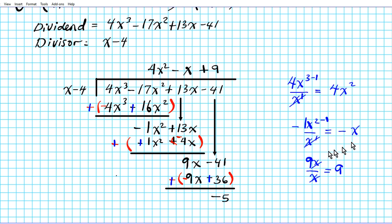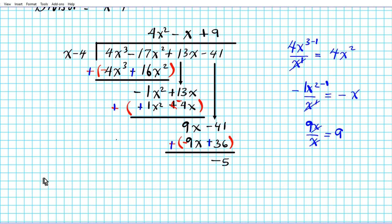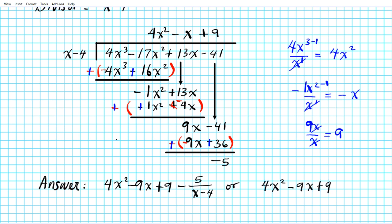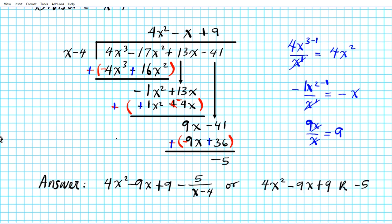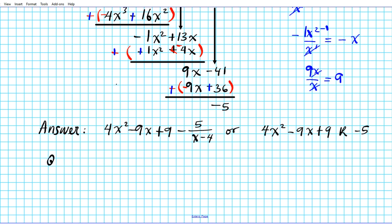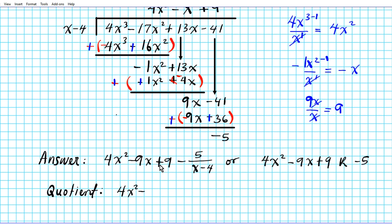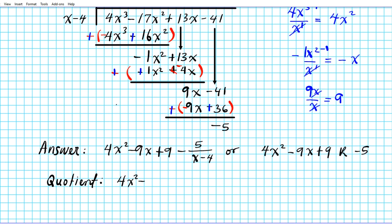Our answer is 4x² minus x plus 9, with a remainder of negative 5 over x minus 4. You can write it as 4x² minus x plus 9 remainder negative 5. Our quotient — the portion of the answer without the remainder — is 4x² minus x plus 9.